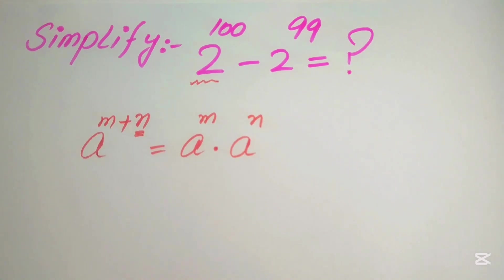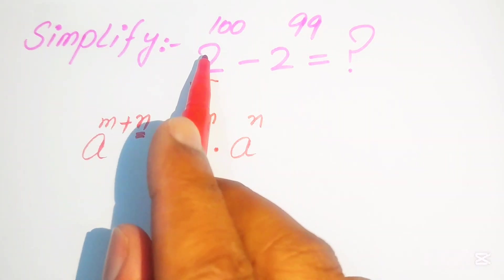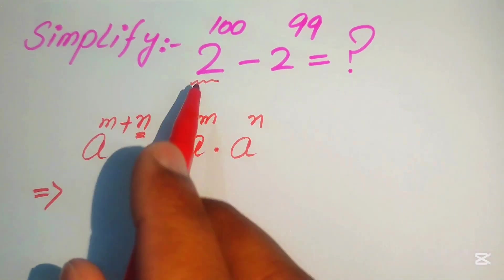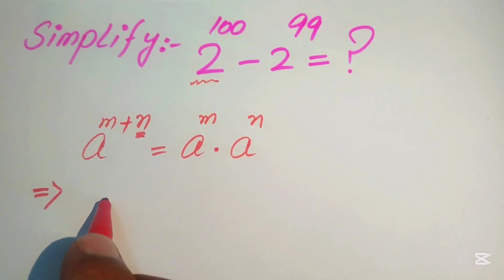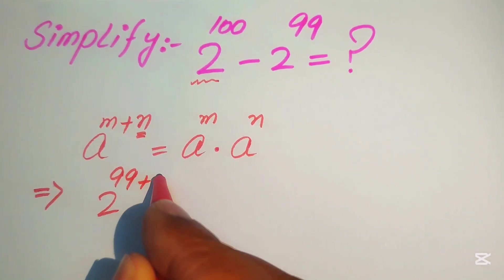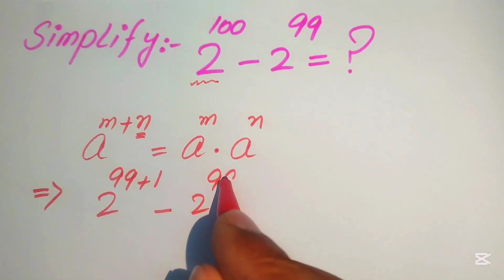Now according to this rule, we first break the first part of the above expression. This is 2 to the power of 100, and we write it as 2 to the power of 99 plus 1, minus 2 to the power of 99.